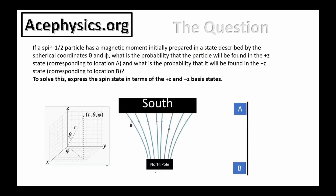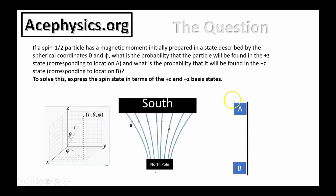Now let's go through and solve the problem using all the necessary mathematics without leaving out any steps. Here's the question: a spin-one-half particle has a magnetic moment initially prepared in a state described by the spherical coordinates theta and phi. What is the probability that the particle will be found in the plus-z state corresponding to the top of the screen, and what is the probability that it will be found in the minus-z state corresponding to the bottom? To solve this, express the spin state in terms of the plus and minus z basis. The direction is defined by angle theta relative to the z-axis and phi relative to the x-axis.